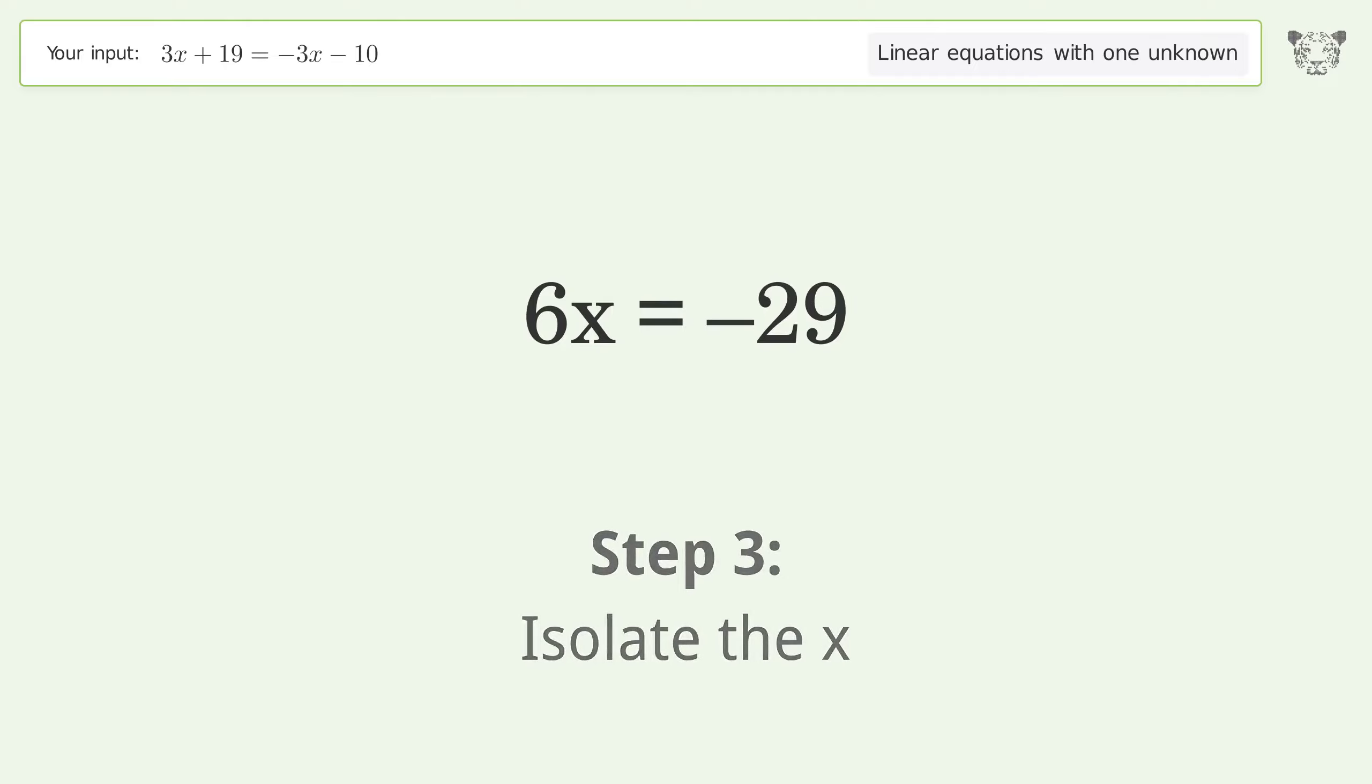Isolate the x. Divide both sides by 6. Simplify the fraction. And so the final result is x equals negative 29 over 6.